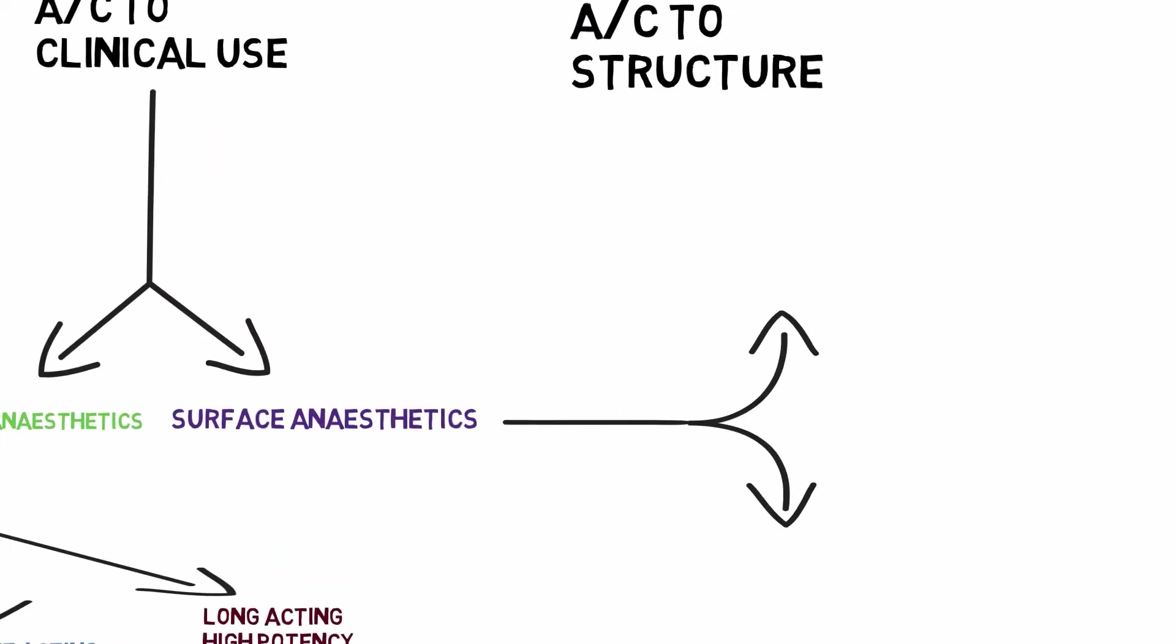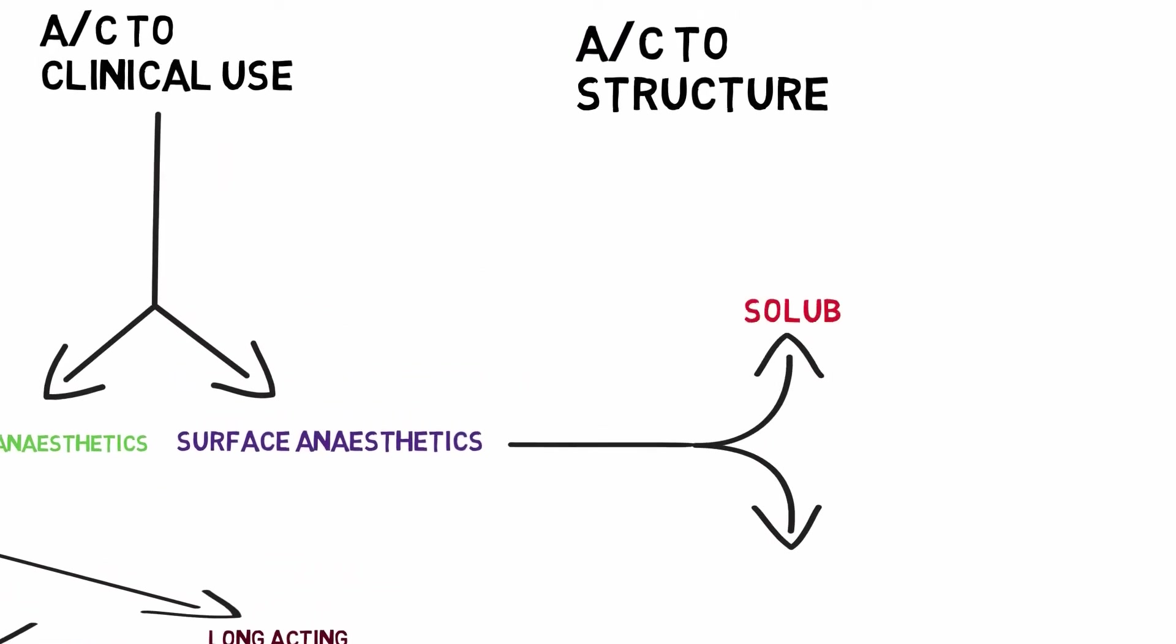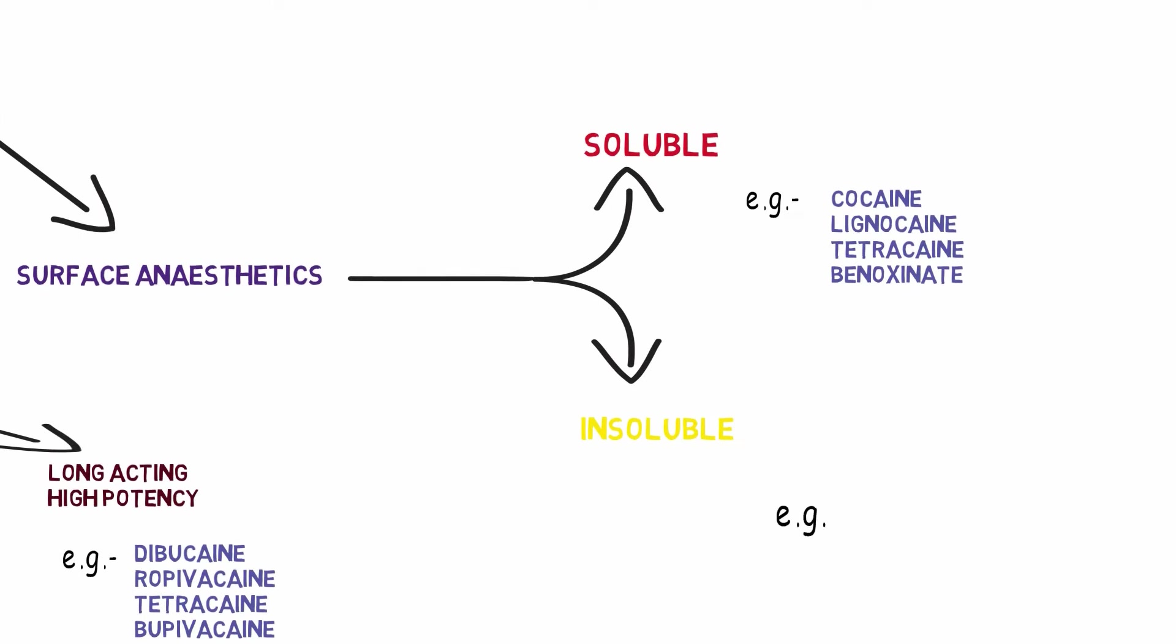Surface anesthetics are further divided into two types: soluble and insoluble. The examples of soluble anesthetics are cocaine, lignocaine, tetracaine, and benoxinate. And the examples of insoluble anesthetics are benzocaine, oxethazaine, and butamben.